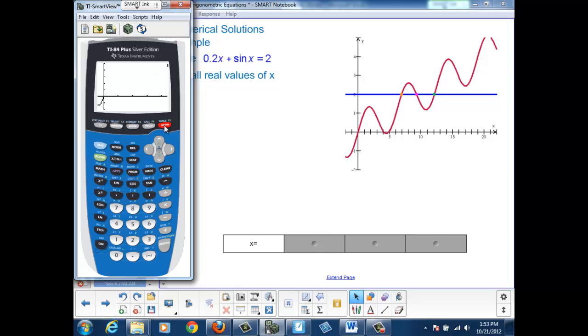If I graph this, I can see that my sine x function is rising because of the linear term added to it. And then the line at y equals 2 crosses in three distinct places.